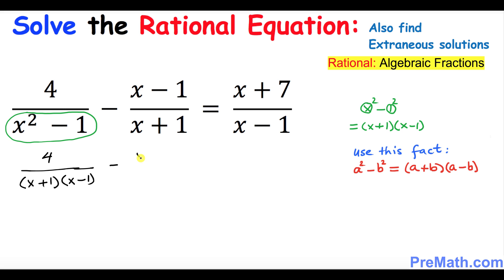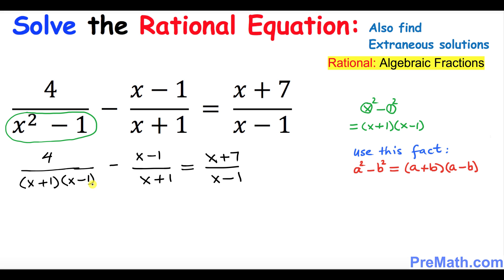So the equation becomes: (x minus 1) over (x plus 1) equals (x plus 7) over (x minus 1). The next thing we want to do is remove these fractions, as that is the easiest way to solve this equation.